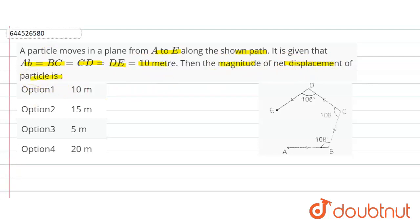So here AB, BC, this is 10 centimeters, this is also 10 centimeters - sorry, this is meters, 10 meters is given. This is 10 meters, this is also 10 meters, this is 10 meters, and this is also 10 meters. We have to find the displacement from A to E.